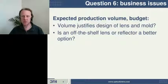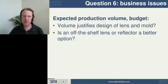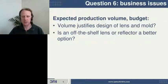The sixth thing to consider is any business issues: what your budget is and what your intended volume production is. This will help determine whether you should just be using an off-the-shelf lens, or whether you have the budget and the volume to justify making a mold and going into high-volume production.